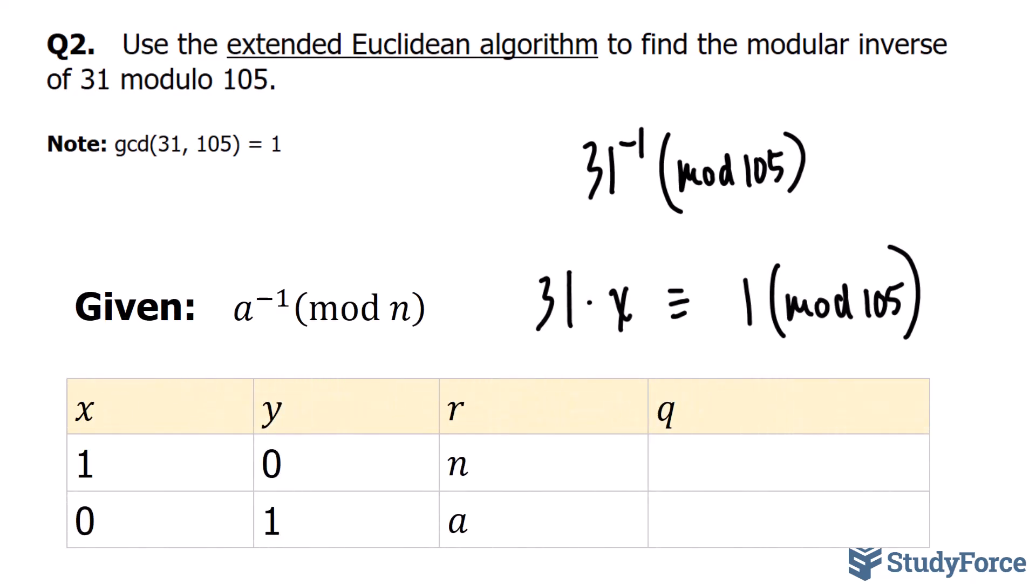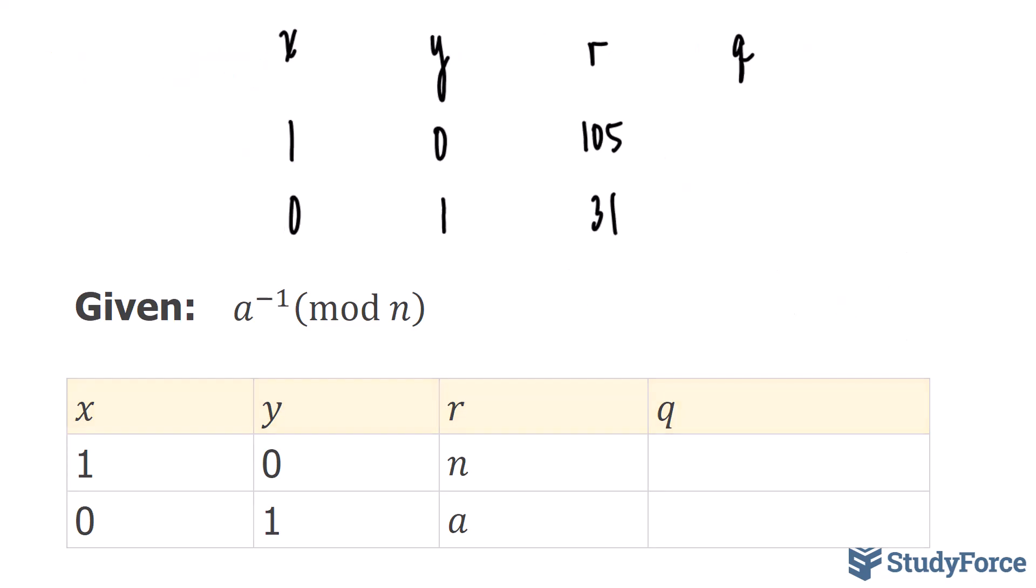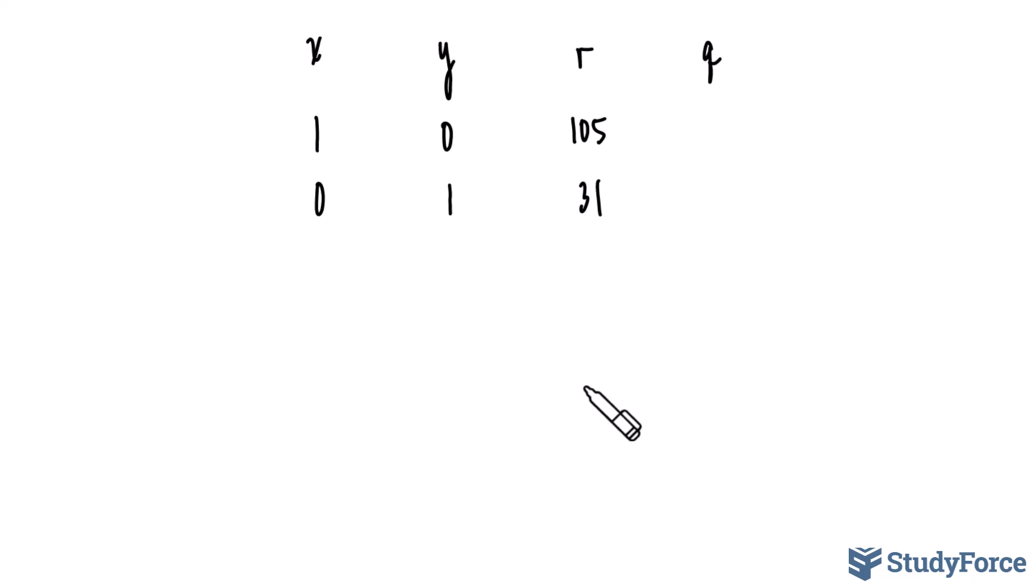As you can see on the table on your screen, we have four columns, x, y, r, and q. For us, the value of a is 31 and the value of n is 105. Let's go ahead and place those values into this table. By following a series of steps which I'm about to show you, what we're looking to achieve is to produce a value where r is equal to 1.